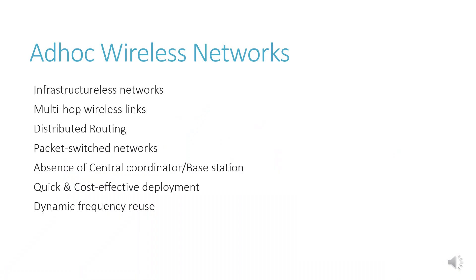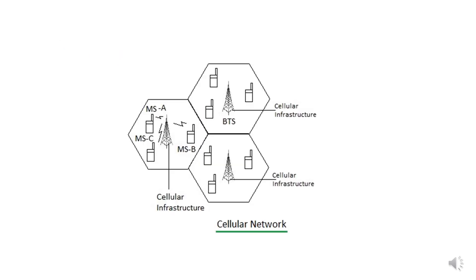Ad hoc wireless network features: it is an infrastructureless network with multi-hop wireless links, distributed routing, and packet-switched network design. There is an absence of a central coordinator or base station. This allows quick and cost-effective deployment and dynamic frequency reuse.